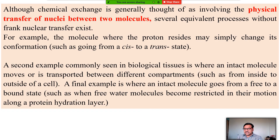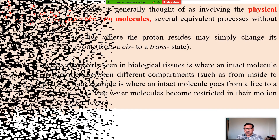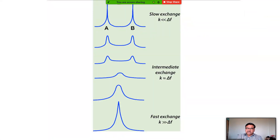Another example commonly seen in biological tissue is where an intact molecule moves or is transported between different compartments, such as from inside to outside of the cell. A final example is where an intact molecule goes from a free to a bound state, such as when free water molecules become restricted in their motion along a protein-hydrogen layer. So bound state water molecules and free state water molecules exist at the outer side and inner side of the cell wall.